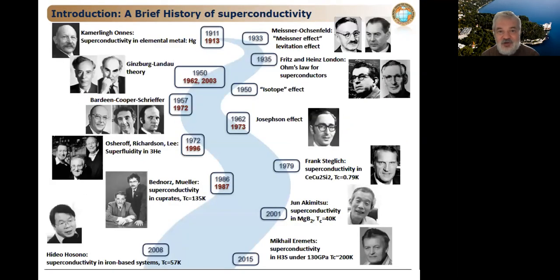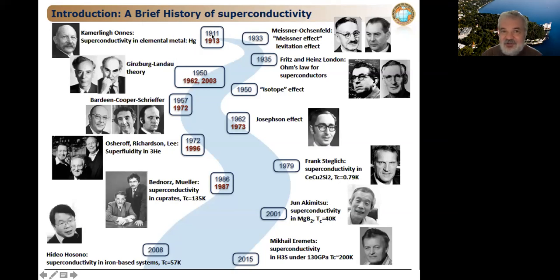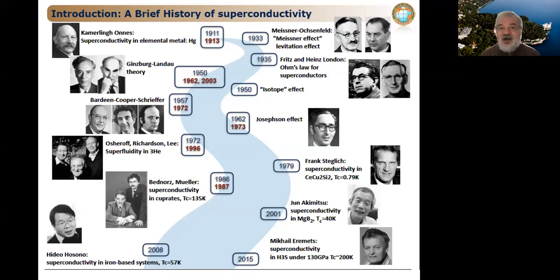This table is a brief summary of the history of superconductivity showing how many Nobel Prizes were given. Blue marks the year of discovery; red marks the year of the Nobel Prize. Starting with Kamerlingh Onnes' experimental discovery of superconductivity in mercury, then the Meissner-Ochsenfeld effect — used for levitating trains — where the magnetic field does not penetrate inside a superconductor.